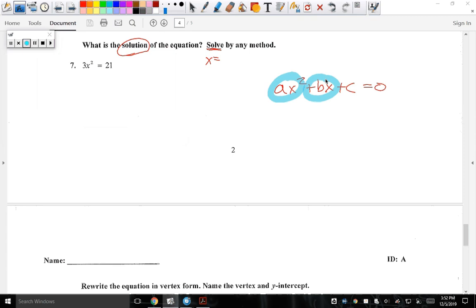Right now, I have an a term, and I have a c term. So I don't have to set it equal to zero. I could solve it from right here, by dividing both sides by three.